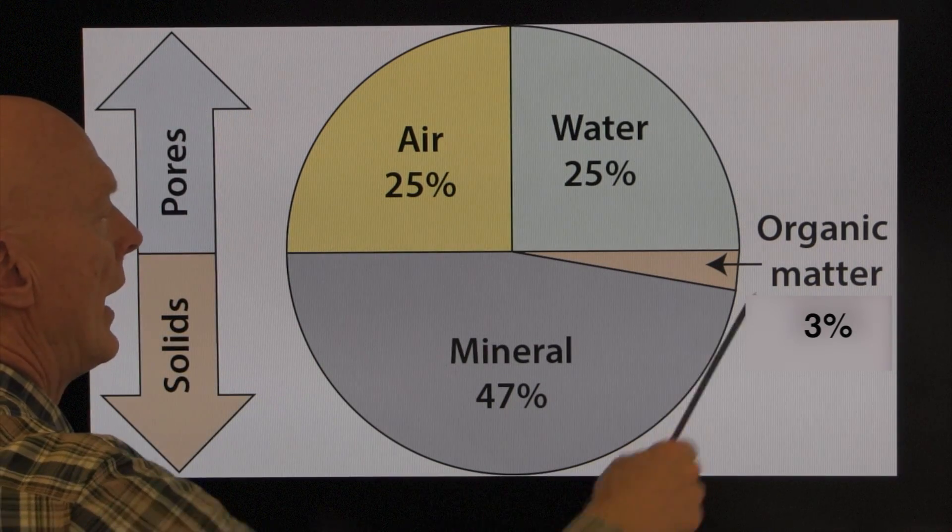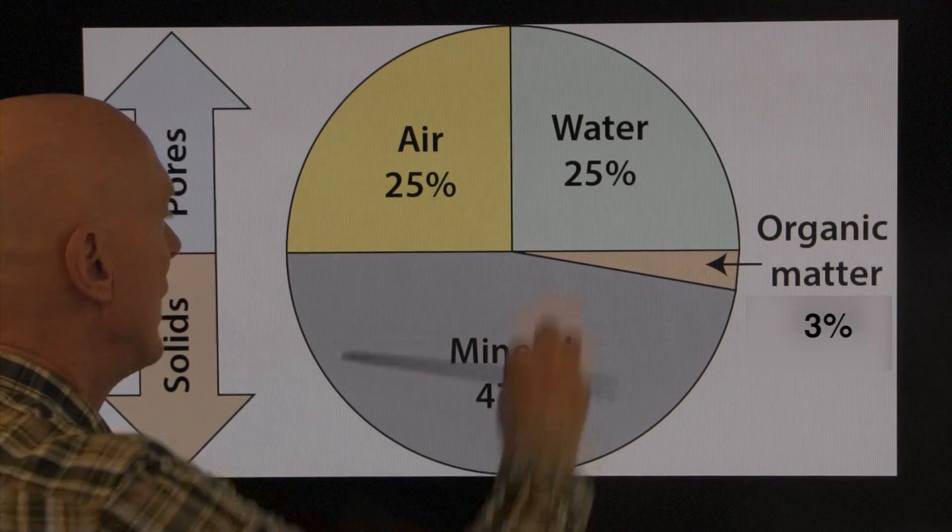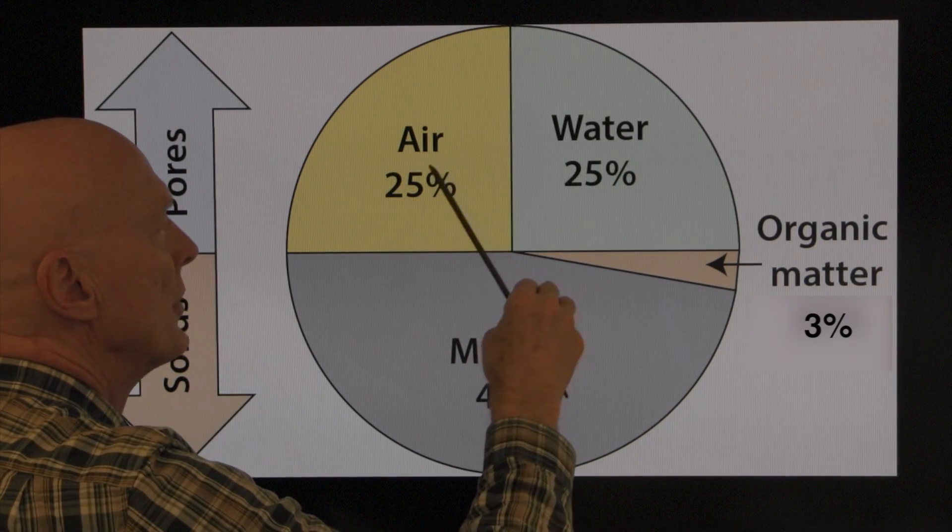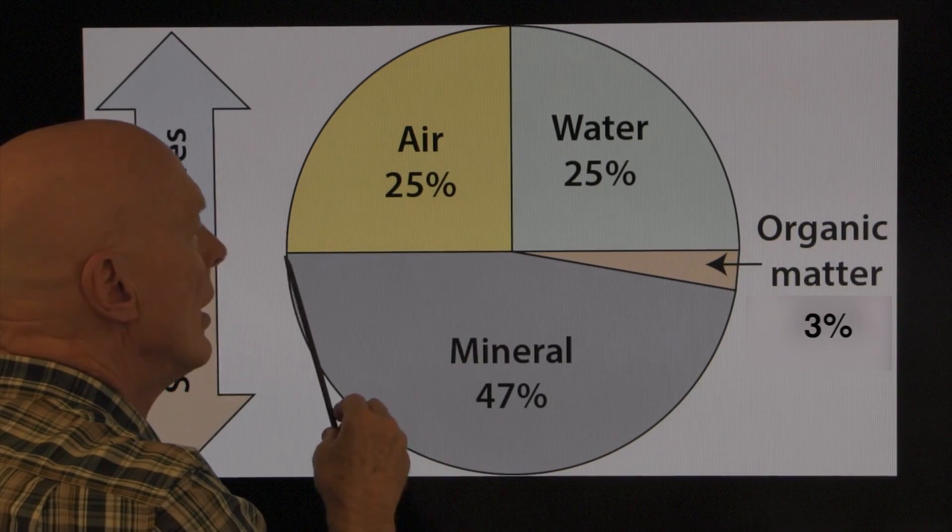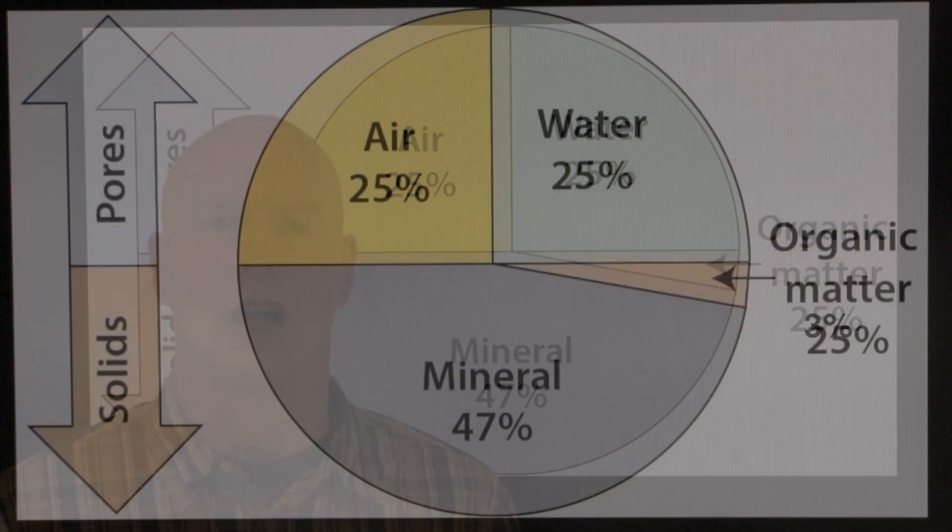Okay, so minerals and organic matter make up 50% of the soil, and those are the solids. You have the solids down here, the pores up here, 25% air, 25% water. The rest of the 50% is organic matter and minerals, which is the solid.